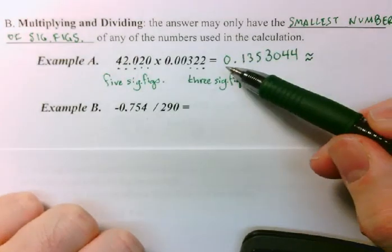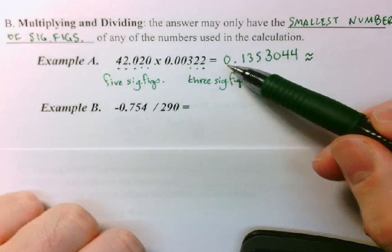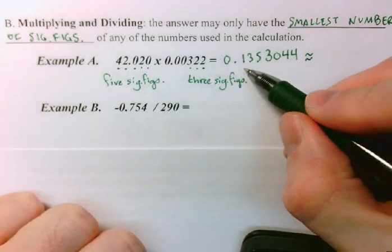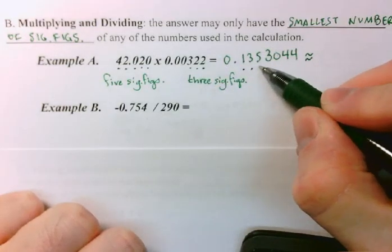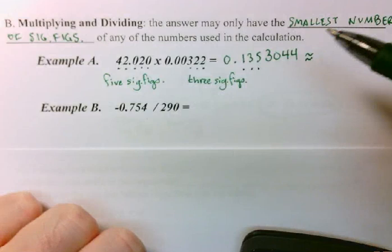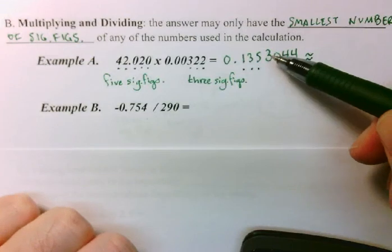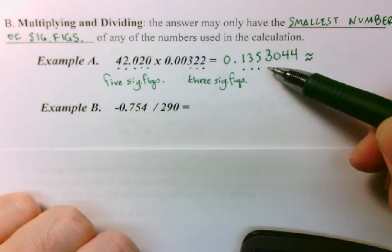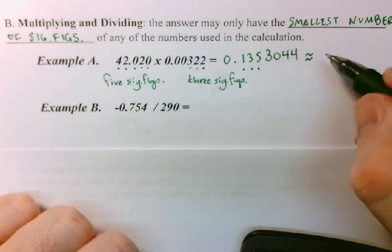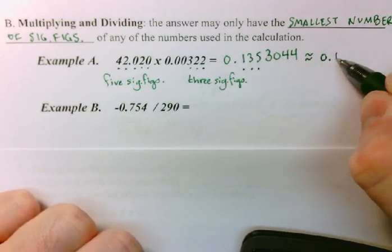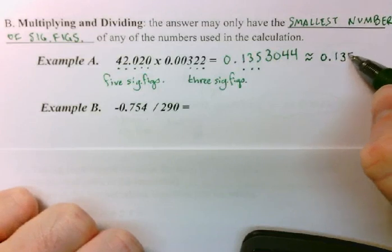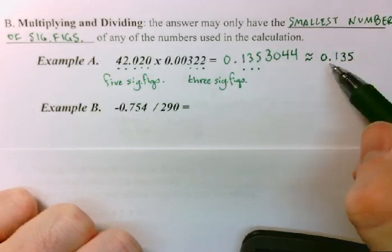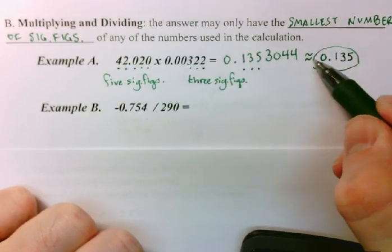Well, this leading zero is not significant. So, my first three sig figs would be that one, that one, and that one. And then I would look at the next digit. And because it is less than a five, it would round down. And so, I would report my scientifically significant answer as 0.135.